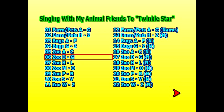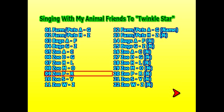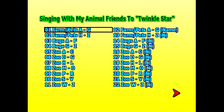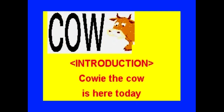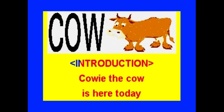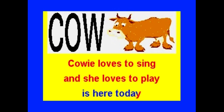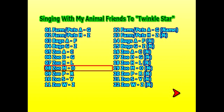Let's say one of the children wants to hear a song about a cow. Go to Farm Pets A to G, scroll down to Cow, click on Cow, and the song will begin to play with my vocal. 'It's Cowie the cow — Cowie the cow is here today. Cowie loves to sing.' Click the menu button and go back to the main menu.